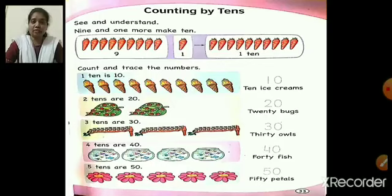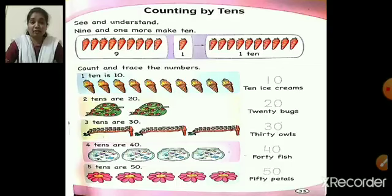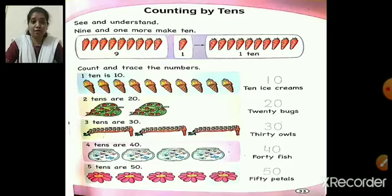It says count and trace the numbers. On the right hand side you have the numbers given in dotted lines — you have to trace all those numbers. Now look at the first picture. It says one 10 is 10 and you can see ice creams. Count and see how many ice creams you have — you have 10 ice creams. How many groups? Only one. One group means one 10 and we have 10 ice creams. So one 10 is 10 — trace number 10.